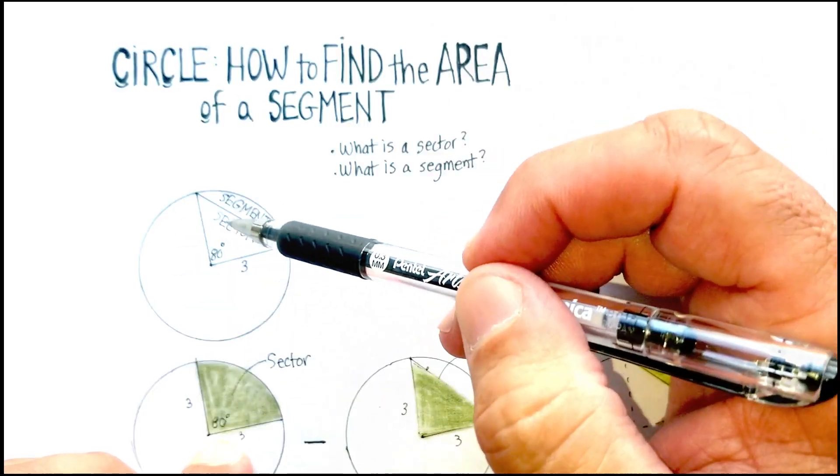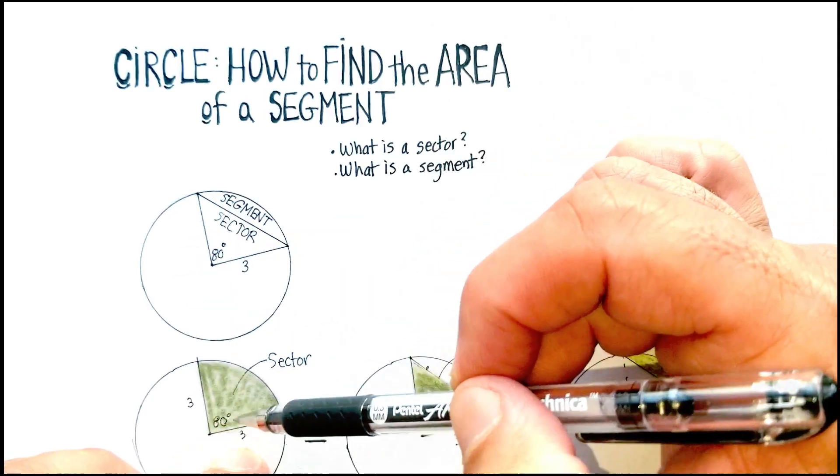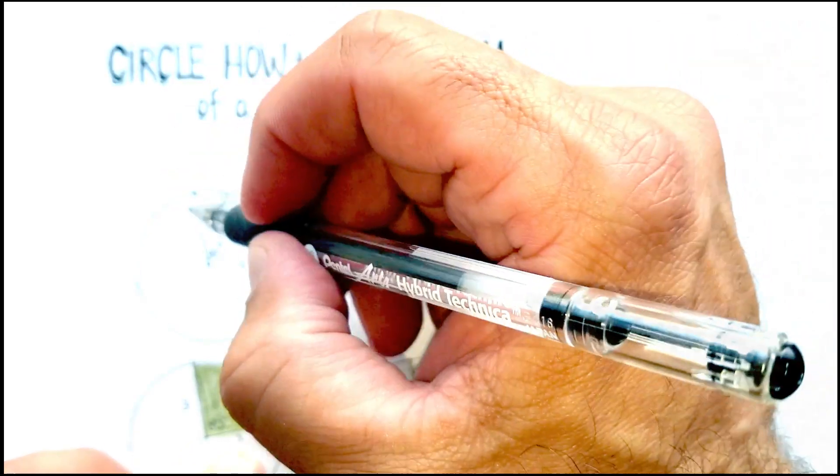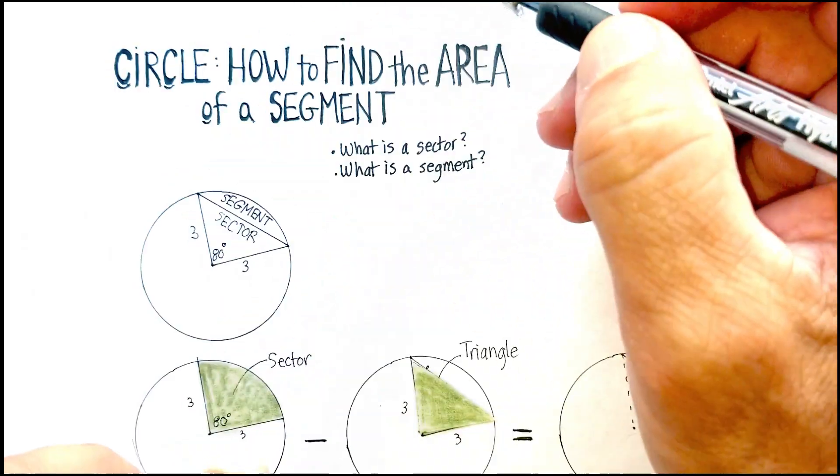For example, this particular sector has a degree of 80. It has a radius of 3 on both sides, okay?